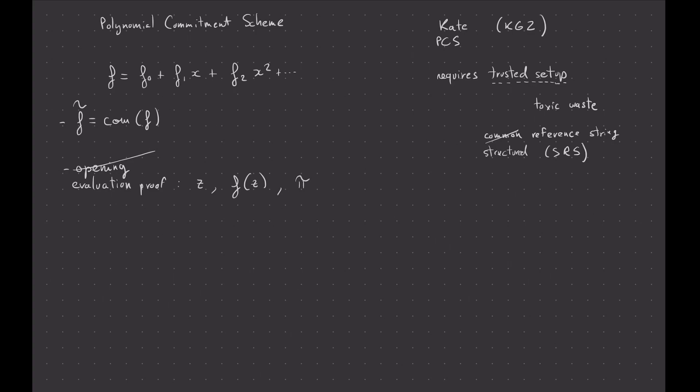But I just wanted to kind of introduce polynomial commitment scheme in this video and mention that Kate is the one that Plonk uses, and it requires a trusted setup, so it's a bit annoying. The other thing I wanted to mention is also that Kate is pairing-based. So they use pairing. So it's a pairing-based polynomial commitment scheme.